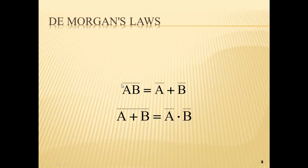Here's AB-not — we've got A and B with a not-bar over the top of it. If we want to apply De Morgan's theorem, you break the line right here and then change the sign underneath it. Since it's an AND, we change it to OR. So AB-not is the same thing as A-not OR B-not.